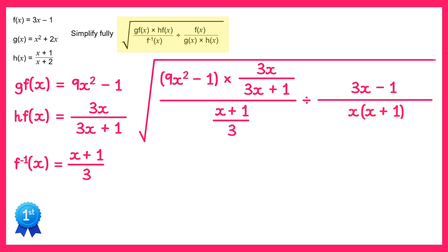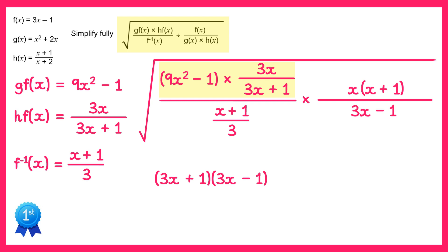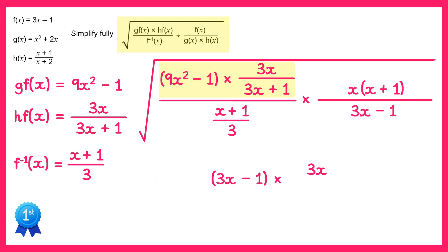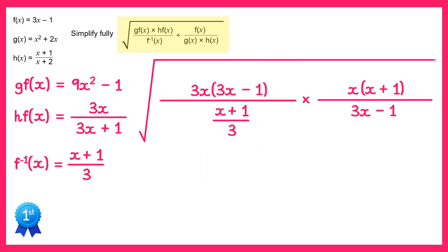This is a division of fractions, so we can change it to a multiplication by taking the reciprocal of the second fraction. Now let's focus on the numerator of the left fraction. The terms inside the brackets — 9x squared minus 1 — are the difference of two squares, so we can write this as 3x plus 1 times 3x minus 1. We can now cancel out the 3x plus 1's, leaving 3x times 3x minus 1. Let's replace that on the numerator. We can also cancel out the x plus 1's.